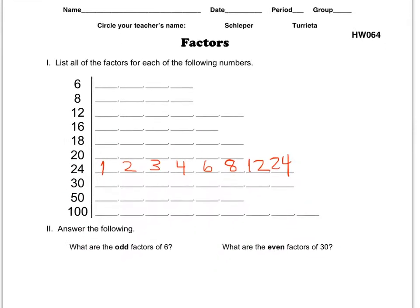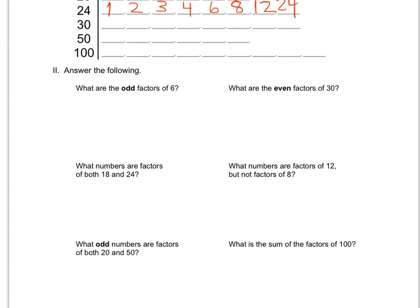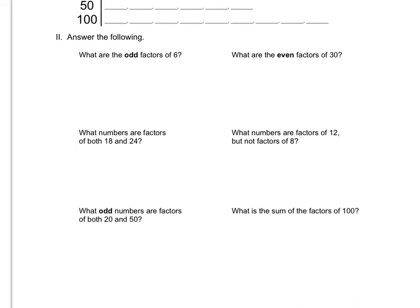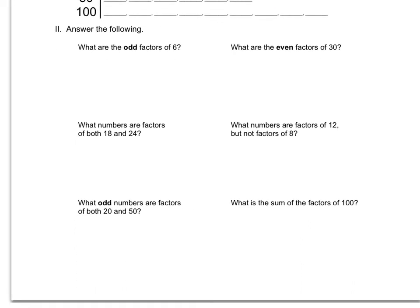I'm going to use this completed chart to help me answer the questions down here. Part 2 says answer the following: What are the odd factors of 6? So look at this completed chart, once you've completed it, look for any factors of 6 that happen to be odd and list those. What are the even factors of 30? Same idea: look at the list, look at all the factors of 30 that are even and list them here.